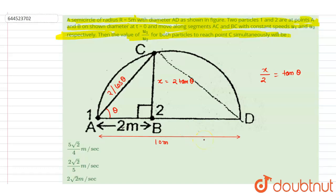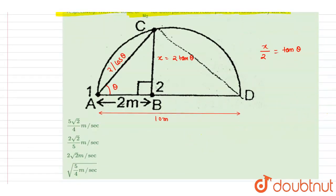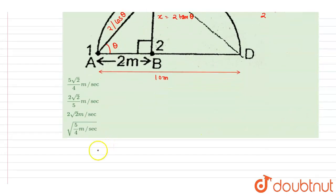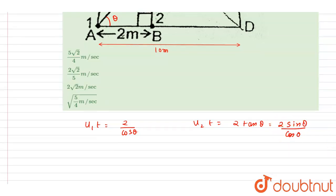So you got this, right? Now we want them to reach C simultaneously and we have the distance, so I will write down u1 into t is 2 by cos theta, and u2 into t is 2 tan theta.